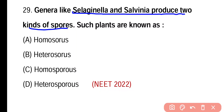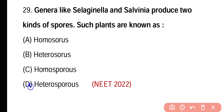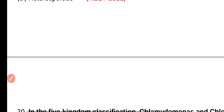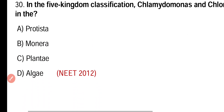Question 29. Plants like Selaginella and Salvinia produce two kinds of spores. Such plants are known as: homosporous, heterosporous, or homosporous or heterosporous. Correct answer is option D — Selaginella and Salvinia produce two different kinds of spores, that's why they are known as heterosporous plants.